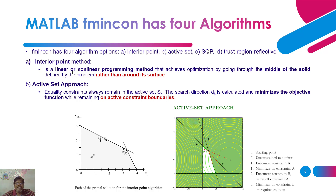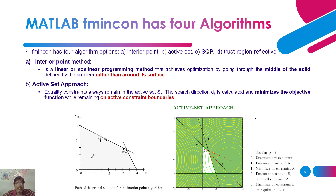The interior point method is a linear or nonlinear programming method that achieves optimization by going through the middle of the solid region defined by the problem — not around the surface, but through the interior. Active set is another kind: it is only for equality constraints, always remaining on active sets. The search direction d_k is calculated to minimize the objective function while remaining on the active constraint boundary.